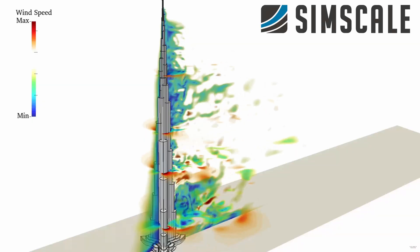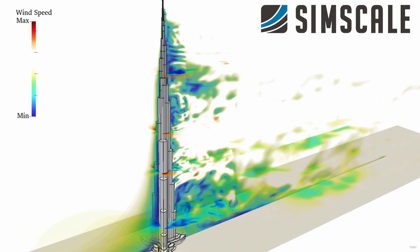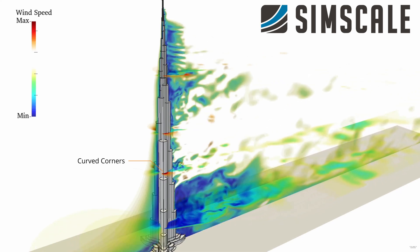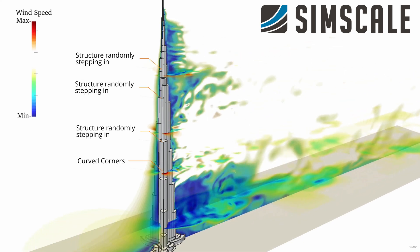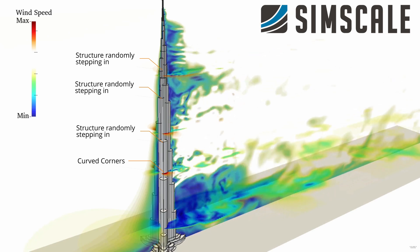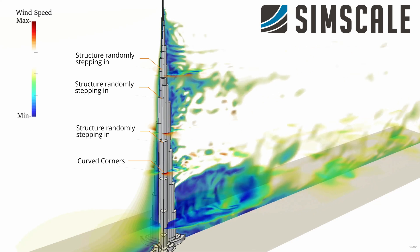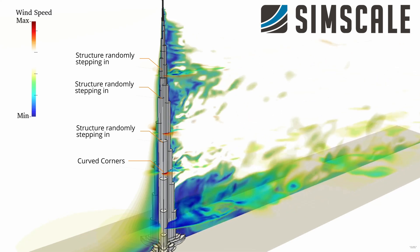Similar to the other towers, there was a vortex shedding problem with the Burj Khalifa as well. They shaped the tower by introducing bumps across the structure — similar to the bumps on a golf ball — and by curving the corners and randomly stepping the tower in as it went up. This effectively confused the wind and eliminated vortex shedding, allowing the tower to cut through the wind without destructive vortexes forming. Because the tower was so stiff due to the buttress system, it didn't require any tuned mass damper.